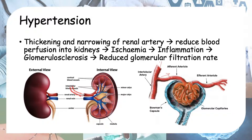At the same time, because of this thickening, your blood vessels also narrow. As a result of this narrowing, less blood is going into your kidneys. Since blood is required to supply oxygen and remove waste, this decreased perfusion leads to ischemia — a lack of blood flow to the kidney cells.